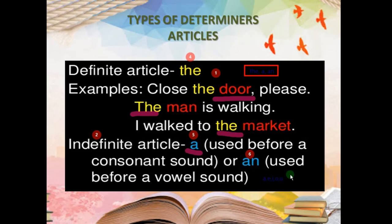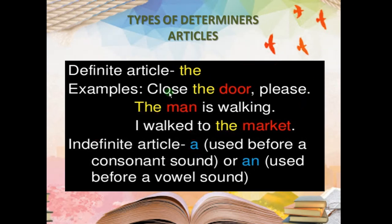For example: 'an umbrella' — because 'umbrella' starts with a vowel sound. But 'unique' starts with 'U' yet the sound is 'yoo' (a consonant sound), so we say 'a unique place.' After the five vowels, the remaining 21 are consonant sounds. Articles: 'the' is definite, and 'a' or 'an' is indefinite. Now, this exercise you have to do as classwork — fill in the blanks using appropriate articles.